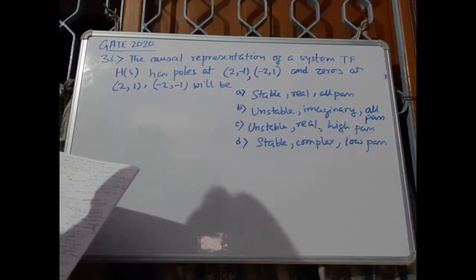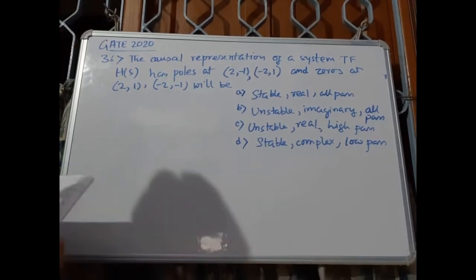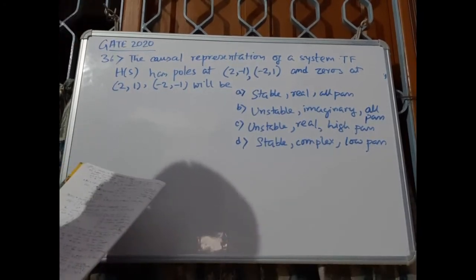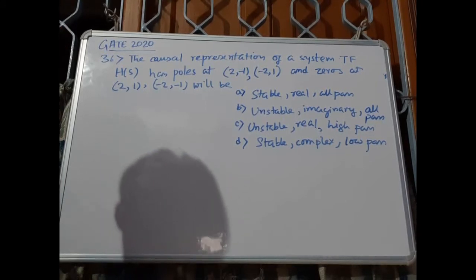This is problem number 36 of GATE 2020. The causal representation of the system transfer function H(S) has poles at 2+j, -2+j, and zeros at 2+j, -2-j. The options are: stable real all-pass, unstable imaginary all-pass, unstable real high-pass, and stable complex low-pass.